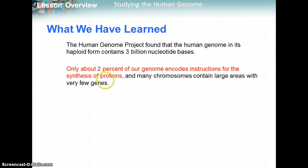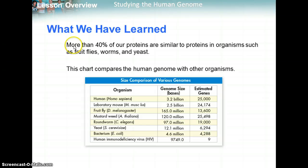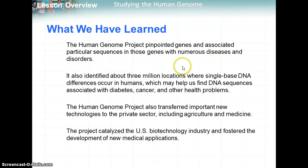We found that only about 2% of our genome actually codes for proteins, and some parts of chromosomes contain large areas with very few genes. We also see that we share many similar base pairs with other organisms — more than 40% of our proteins are similar to those of fruit flies, worms, and yeast. The Human Genome Project pinpointed genes and associated particular sequences with numerous diseases, and identified about 3 million locations where single-base DNA differences occurred in humans, which may help find DNA sequences involved with diabetes, cancer, and other health problems.